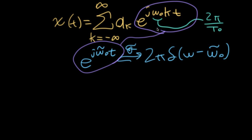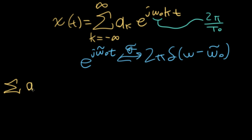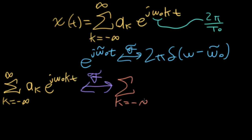So if I match this e to the j omega naught tilde t up with this e to the j omega naught up here, I can then use linearity to easily find out what the Fourier transform is. So if I have a periodic waveform that I've already represented in terms of a Fourier series, meaning I've basically already found these Fourier series coefficients a_k...